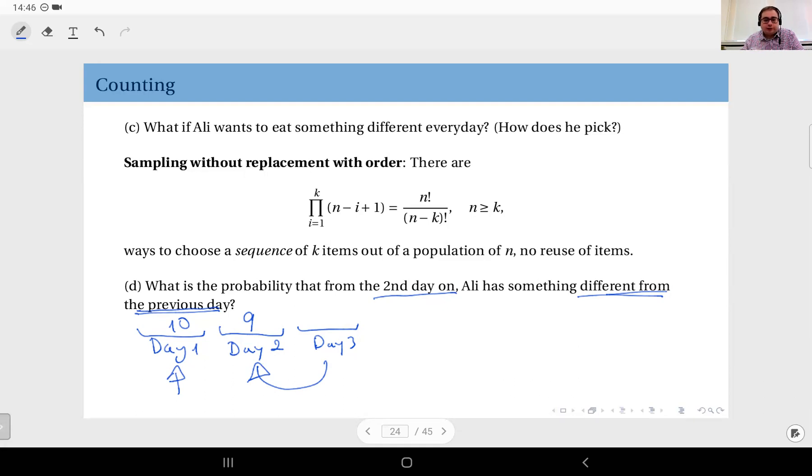And this pattern continues. Day four, five, six, and seven—Ali will have nine choices.